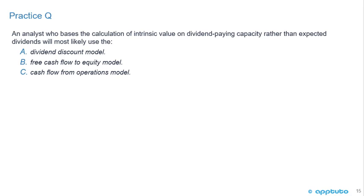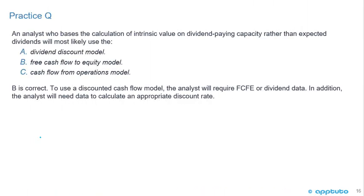Final practice question: An analyst who bases the calculation of intrinsic value on dividend-paying capacity rather than expected dividends will most likely use: A) the dividend discount model, B) the free cash flow to equity model, or C) the cash flow from operations model. This is a tricky but important distinction. When we're looking at dividend-paying capacity, we're looking at the free cash flow to equity model — it tells us about the capacity of the company to pay dividends.